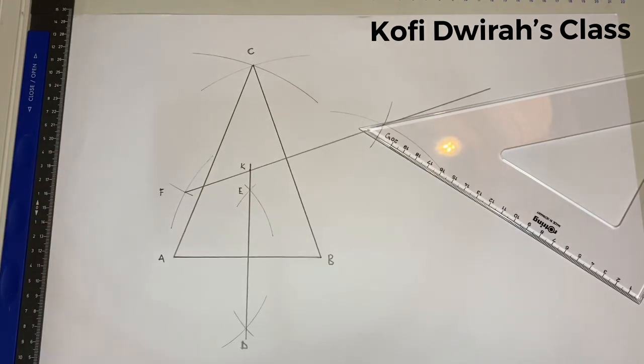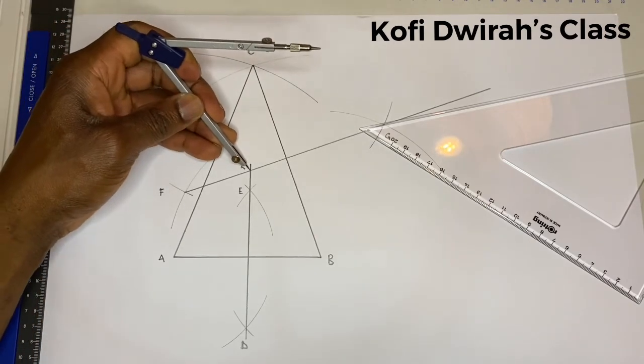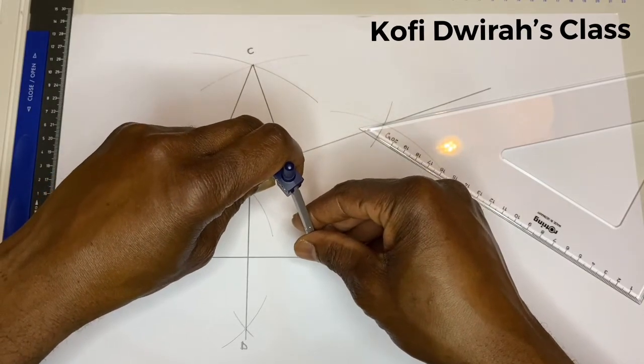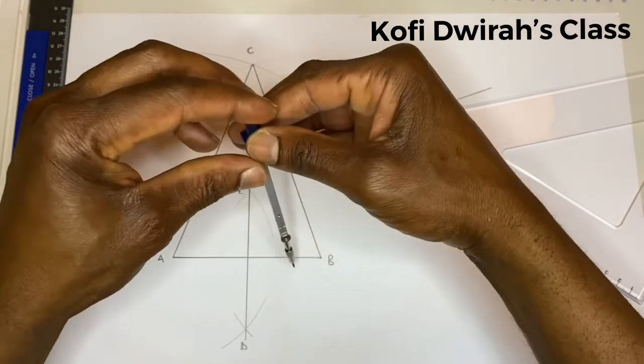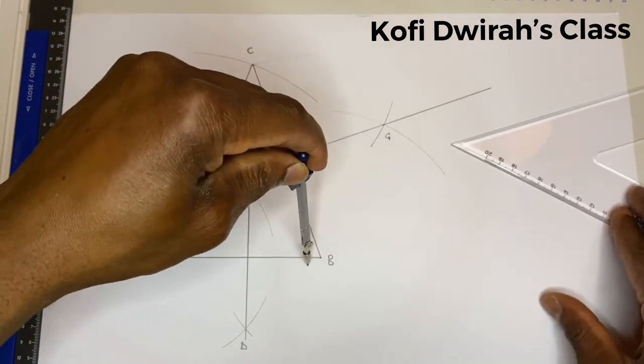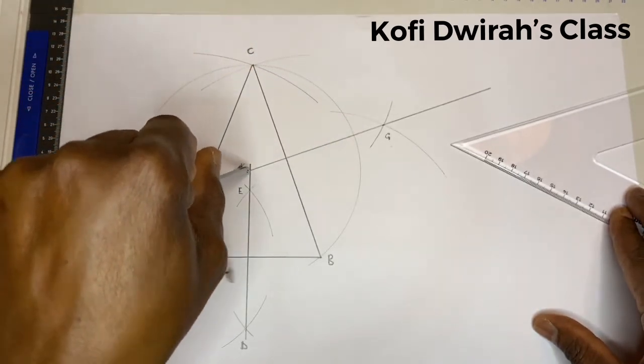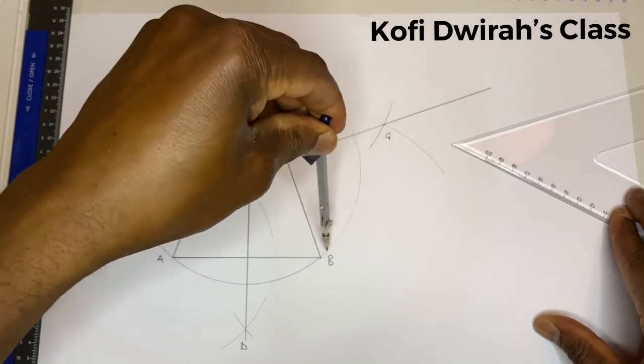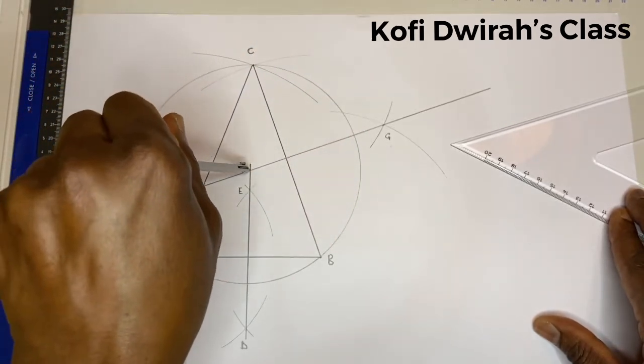So at point K, open your compass to B. You can check. To B. Then you draw your circle. Good.